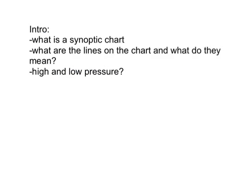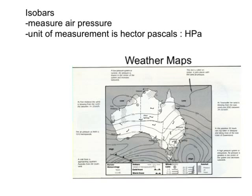So what is a synoptic chart? A synoptic chart is just a weather map. The thing that separates it from a normal map is there are lines on the map. These lines are called isobars, and they measure barometric air pressure. The lines match up areas of the same air pressure, and there are two main air pressure features: high and low pressure systems, and we'll look at the difference between the two. Here is a weather map or synoptic chart.